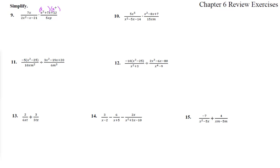Since the leading coefficient is 1, we just need x and x, multiplying to 12 and adding to 7 — that's a 3 and a 4. For the next one, we use the AC method: 2 times negative 21 is negative 42. Factor pairs: 1 and 42, 2 and 21, 3 and 14, 6 and 7 — so negative 7 and positive 6.